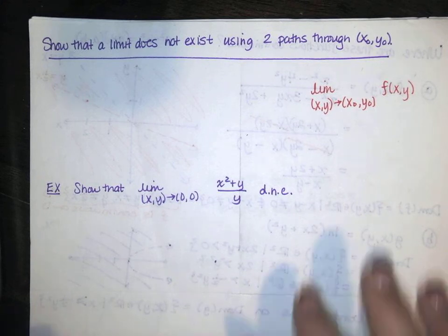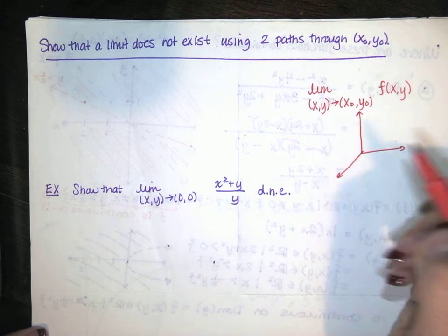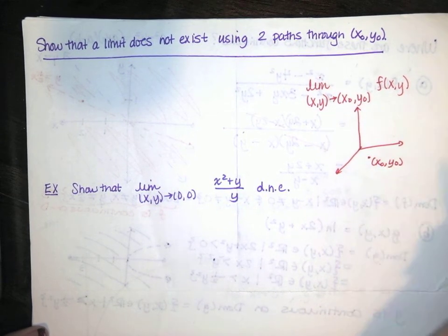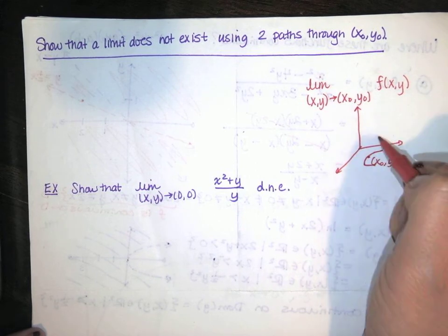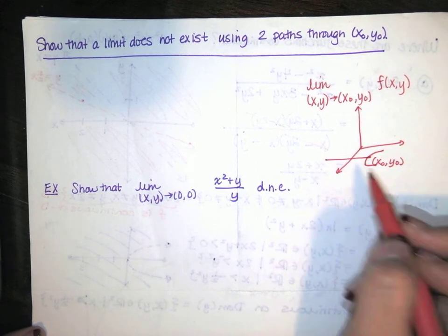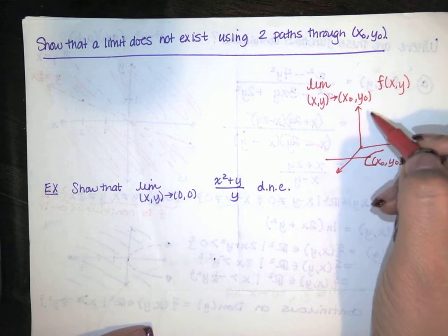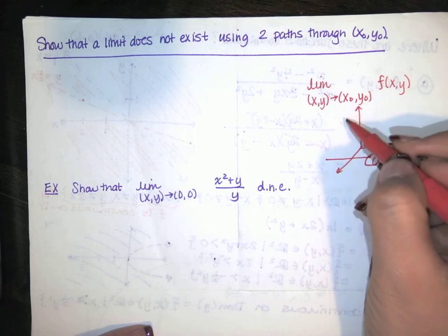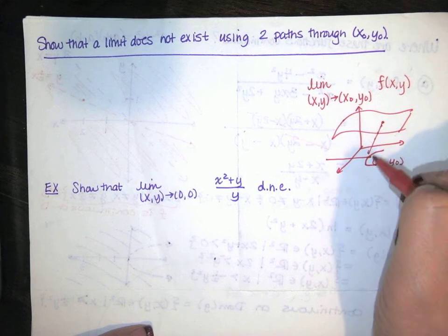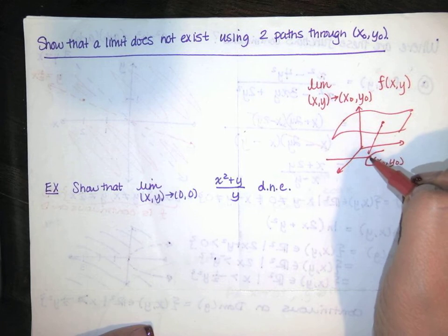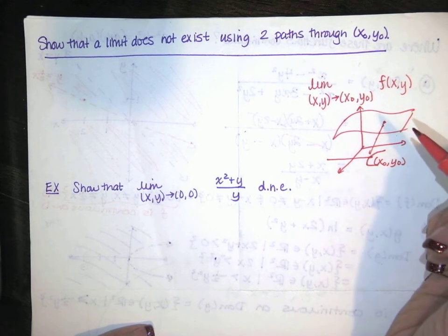One way we can prove a limit doesn't exist is to use two paths that go through the location x naught y naught. Let's say you've got a surface and here's x naught y naught. Along one path, the z values might approach one value — say, approaching 2. Then if we go on a different path to x naught y naught, maybe through x equals x naught, we might find that z is approaching 5 on that path. The limit doesn't exist because if you approach that point through two different paths, you might get two different z values.